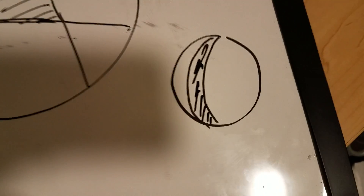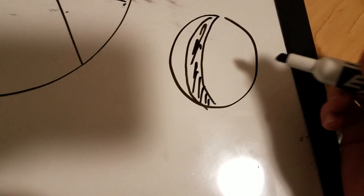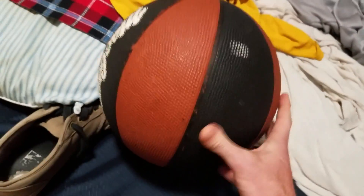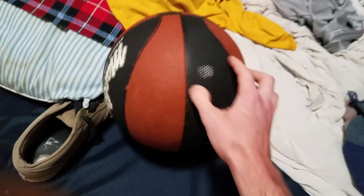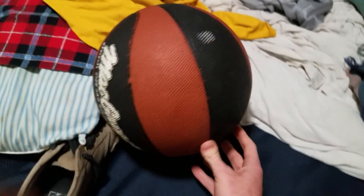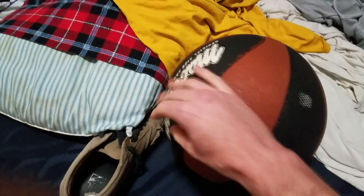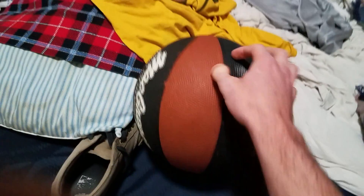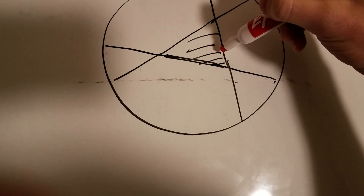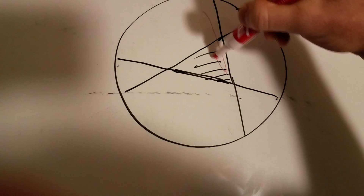You have your sphere here and you're taking a slice out of it — kind of like a slice of cantaloupe. Here's a basketball for visual reference. You take this slice, the dark part, and leave all the rest, and you just want the surface area of that.